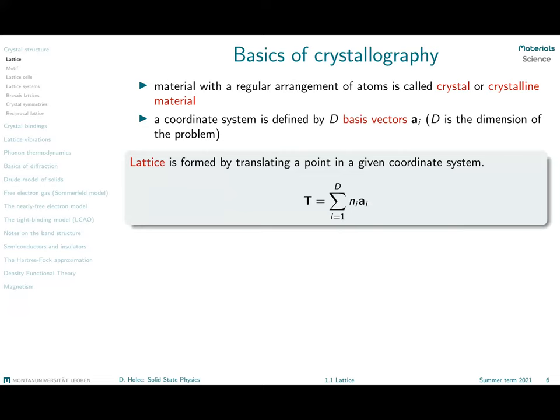We typically have three-dimensional cases, so the capital D will be the dimension number three. We will have three basis vectors that fully describe the translational symmetry of our system. That means the whole lattice will be defined by a set of points T, and each of these points is an integer multiple of the lattice vectors. Each point is given by a triplet n1, n2, n3.